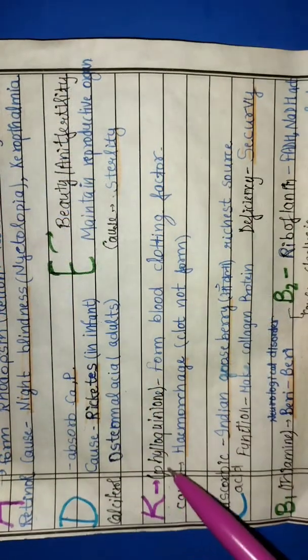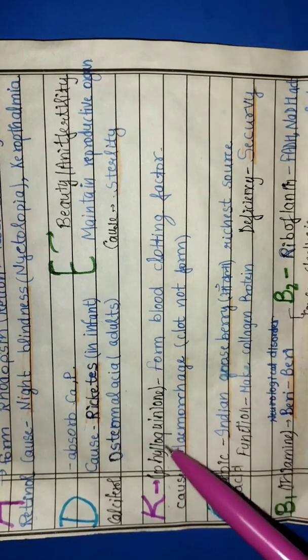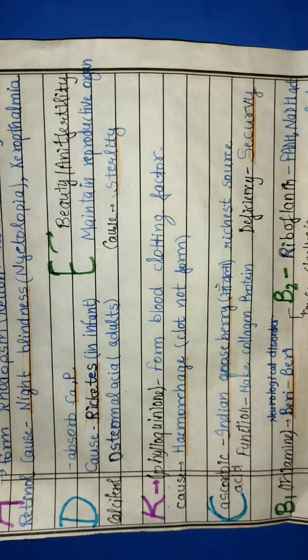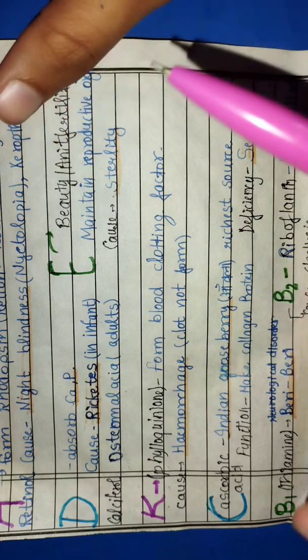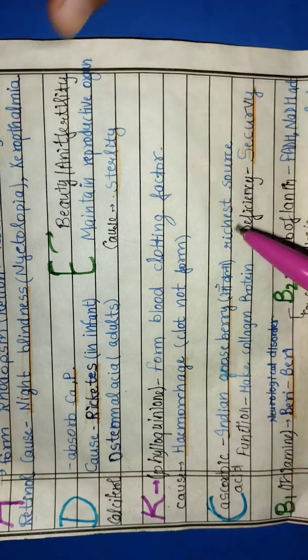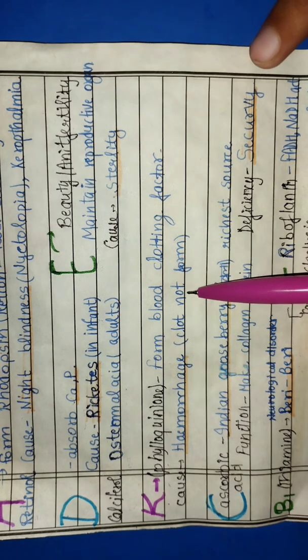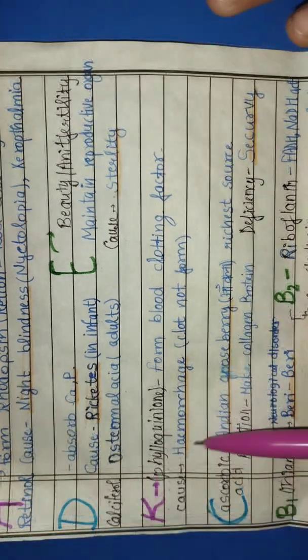Next is vitamin K. Its scientific name is Phylloquinone. It causes blood clotting. If this is less, blood will not clot properly. This causes hemorrhage.